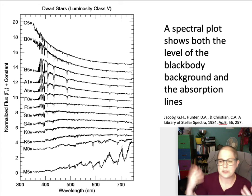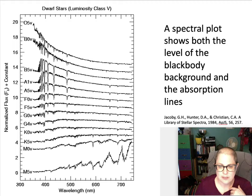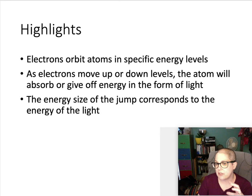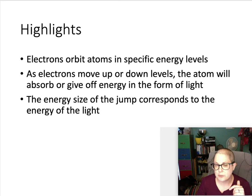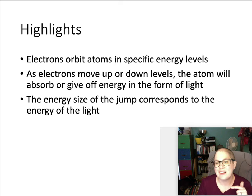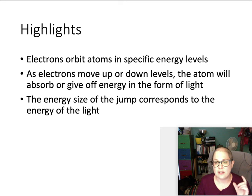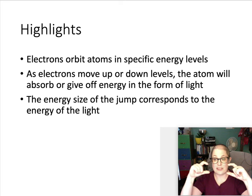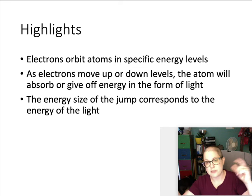To summarize: electrons orbit atoms at specific energy levels. As electrons move up or down levels, the atom will either absorb (moving up) or give off (moving down) a little bit of energy in the form of light. The size of the energy jump corresponds to the energy of that light, which corresponds to a specific wavelength.